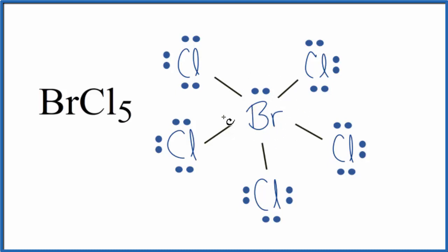That's okay because bromine can have an expanded octet. So the central bromine here has five chlorine atoms and one lone pair of electrons around it, giving it six different groups.